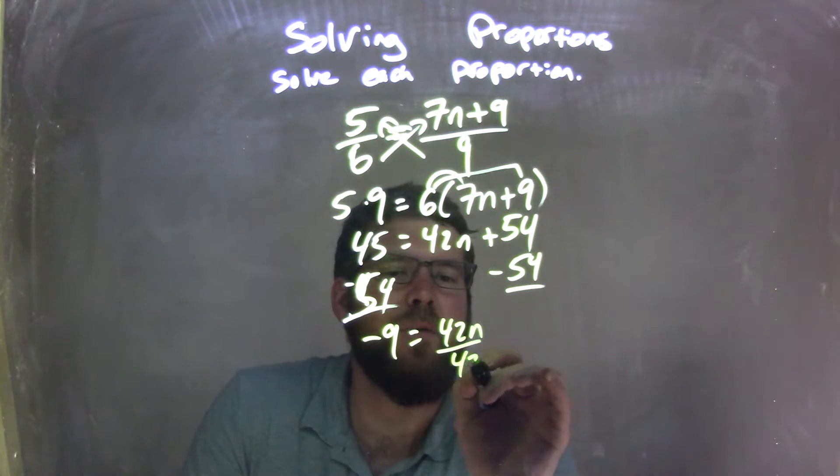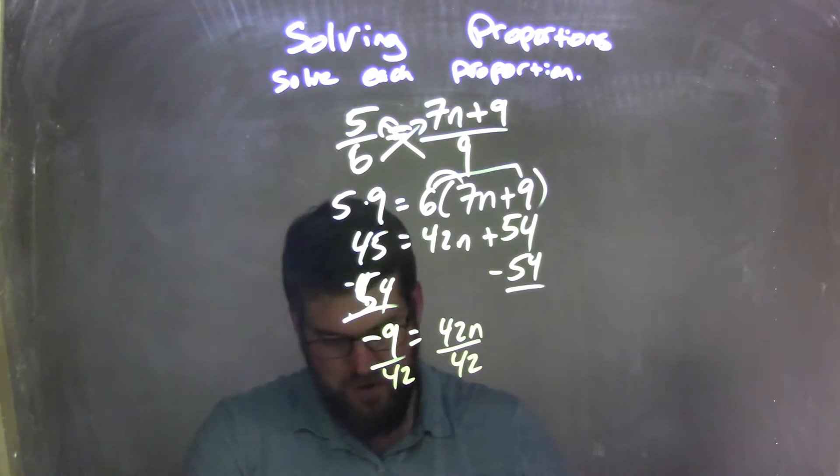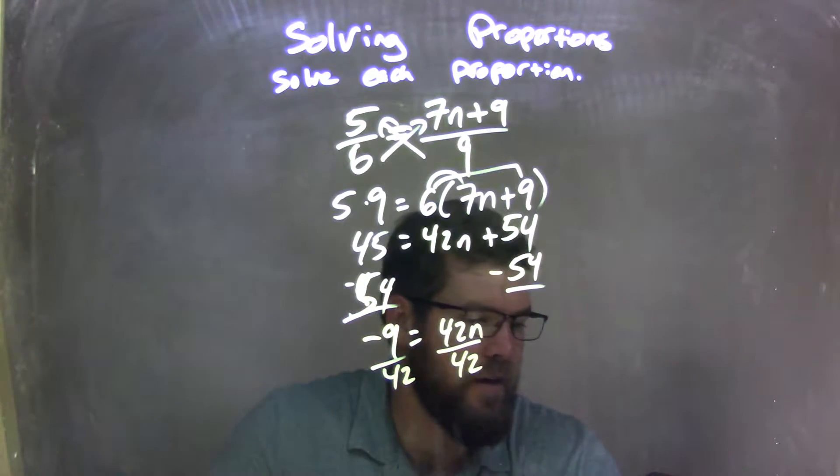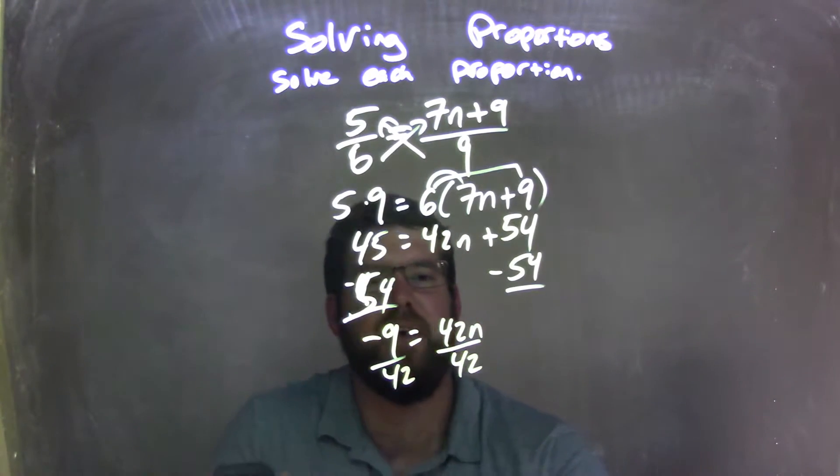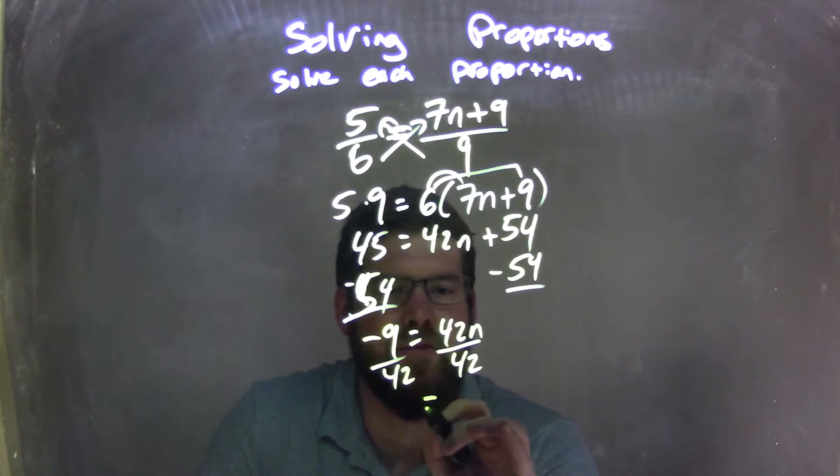Now I need to divide by 42 on both sides, leaving me with - I'm going to use my calculator for this. 9 divided by 42 is, oh, it's complicated. It's going to go on forever, but I'm not doing it by hand.